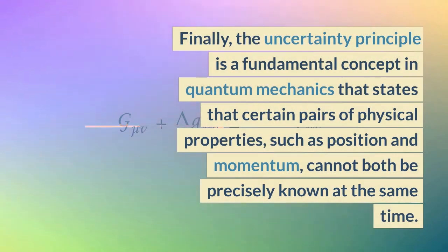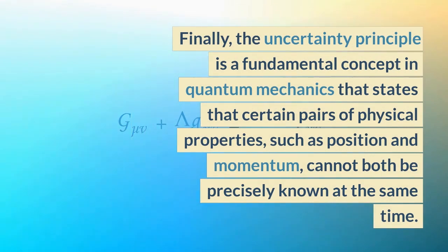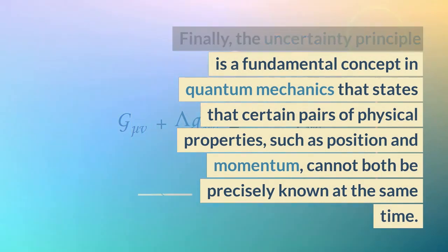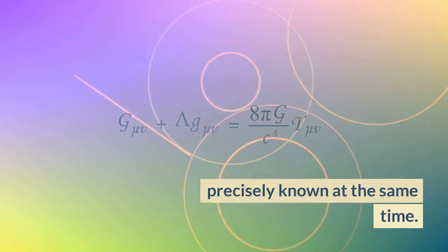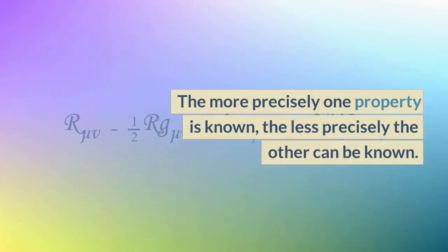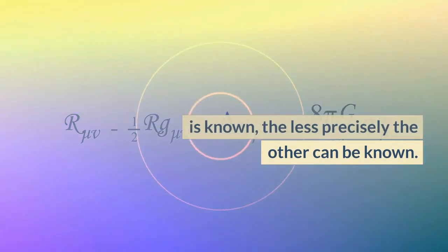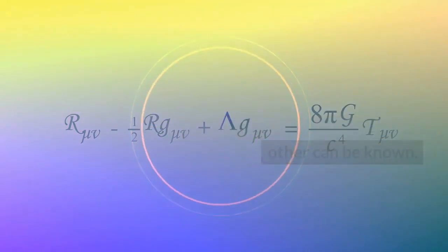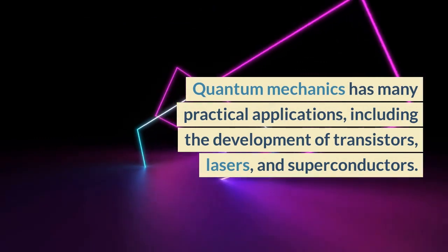Finally, the uncertainty principle is a fundamental concept in quantum mechanics that states that certain pairs of physical properties, such as position and momentum, cannot both be precisely known at the same time. The more precisely one property is known, the less precisely the other can be known.